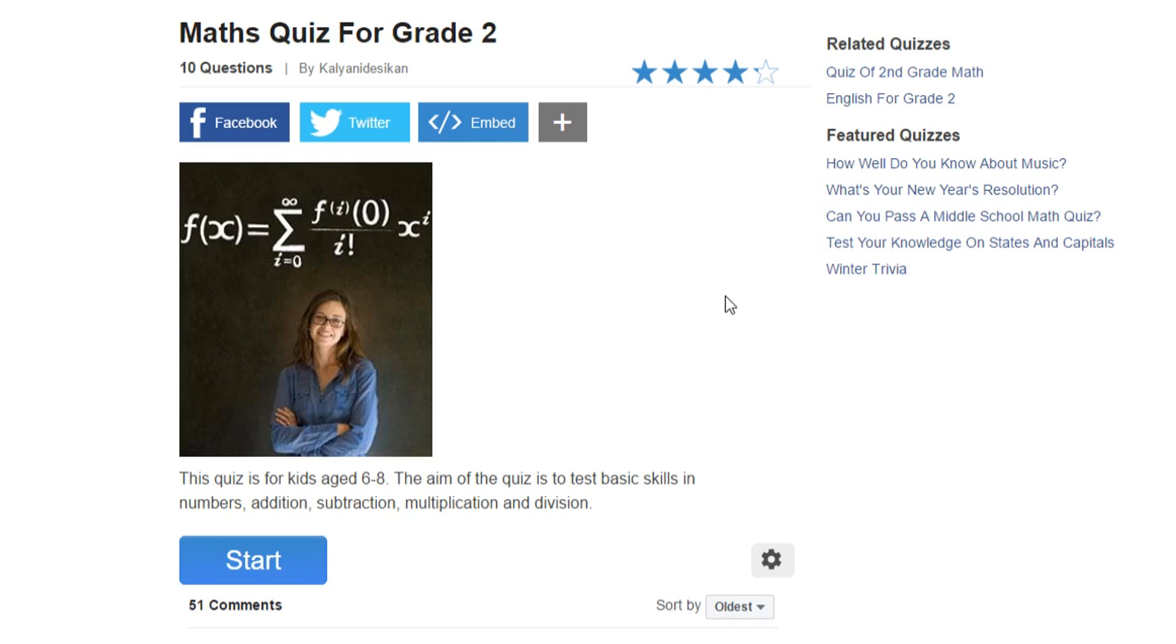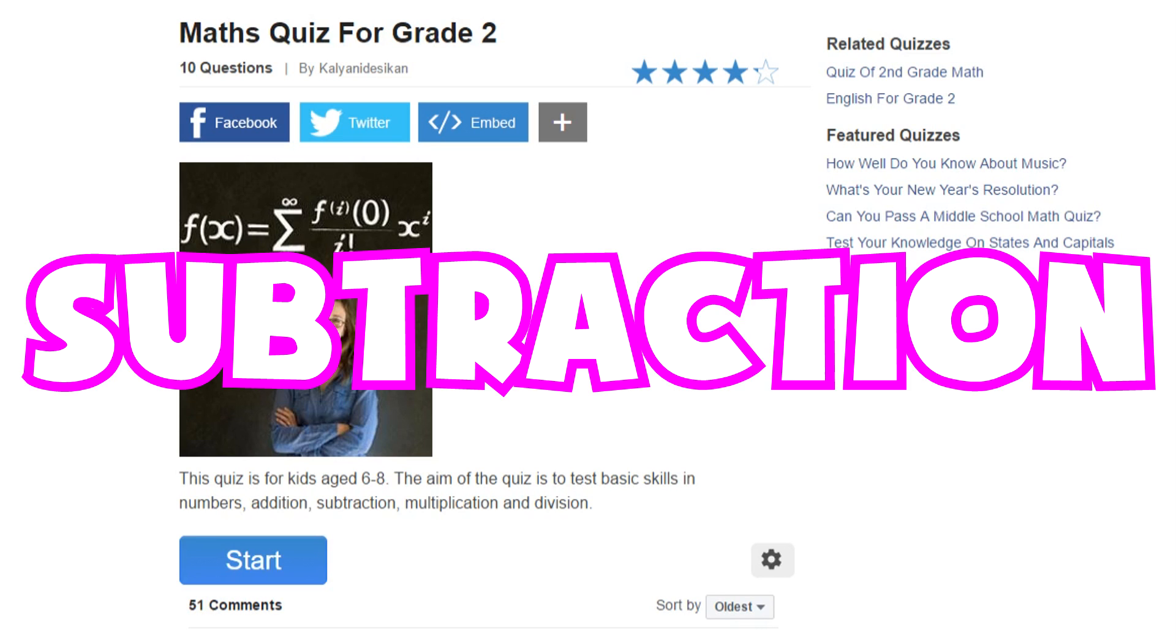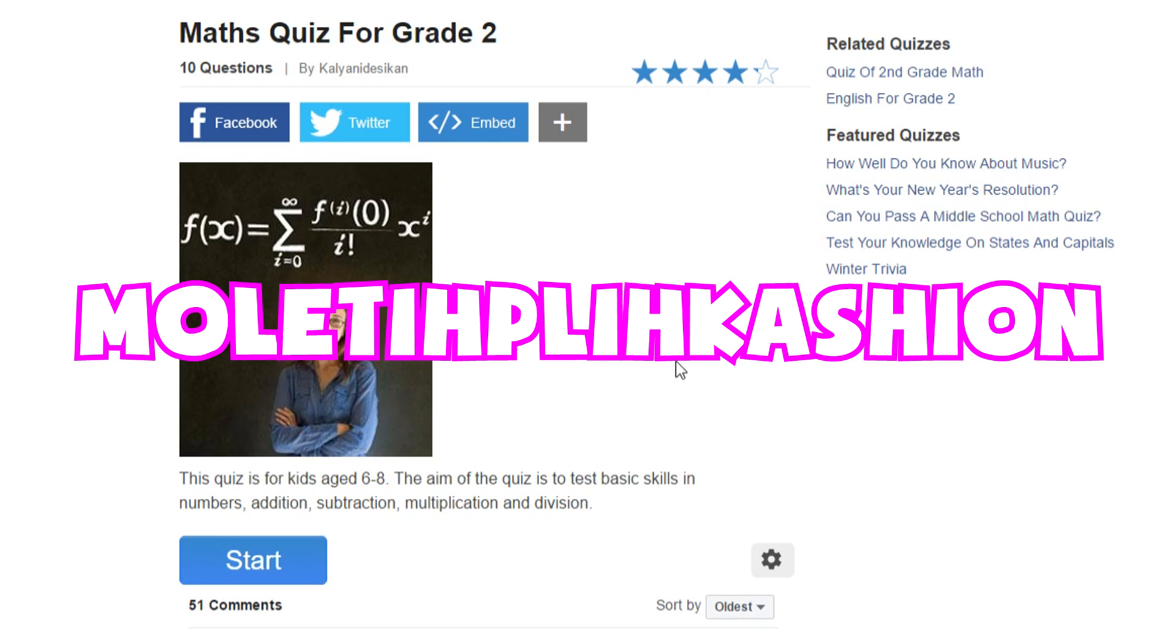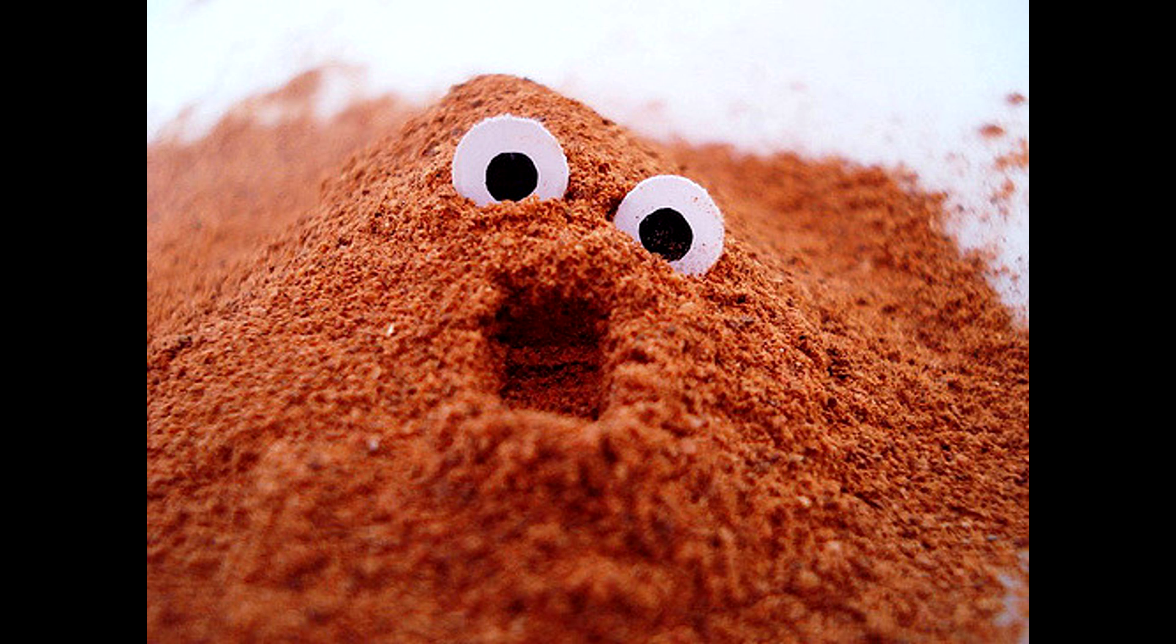Also at the bottom it says the aim of the quiz is to test basic skills and numbers: addition, subtraction, multiplication, and division. Now when I see addition I think of raisins. When I see subtraction I think of subway. When I see multiplication I think of a vacation. When I see division, I think of cinnamon. Those are some tricks that help me in math.